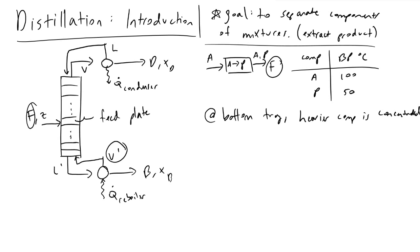V' will have a higher concentration of the lighter component, product P, than the liquid phase that entered. It is very important to note that at each tray we reach a vapor-liquid equilibrium. This means we've given sufficient residence time for the two phases to reach equivalent chemical potentials — allowing whatever wants to exist in the vapor phase to vaporize, and whatever wants to stay in the liquid phase to remain. This is how we separate the mixture, by relying on the temperature difference between the two components.